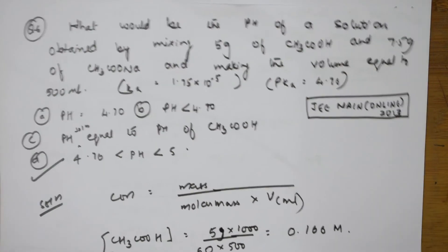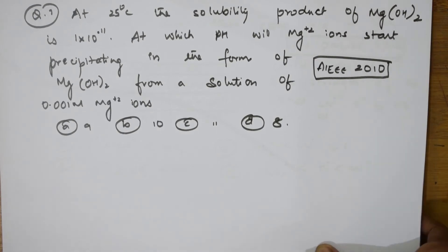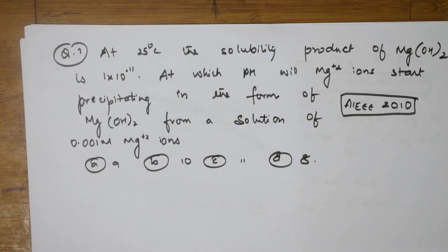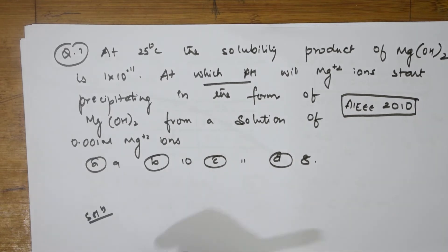Now, let us come back and do one more question. Very interesting question it is. We have given us a 25 degree solubility product question basically. This is your 2010 paper. Here what did they give us? Solubility product, at 25 degrees solubility product of magnesium hydroxide that is 1×10^-11. At which pH will magnesium ions start precipitating in the form of magnesium hydroxide from a solution of 0.01 molar Mg^2+ ions? I need to find this pH. So, as soon as such question is given, try to write the equation.